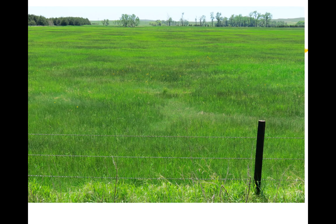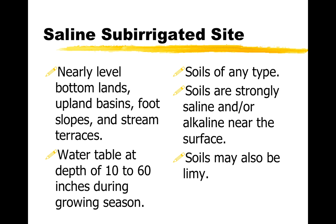Here's a picture of the two sites. You can't tell which is which from the picture because we have to get in and dig to see how far it is to water and look at the plants that are present. Another site similar to the sub-irrigated is saline sub-irrigated. It has the same characteristics — the water table is from 10 to 60 inches down. Soils can be about any kind, but the key is that the soils in a saline sub-irrigated are going to be really saline, salty, or alkaline. That will have a great effect on what plants can grow there and limit the use of the site.